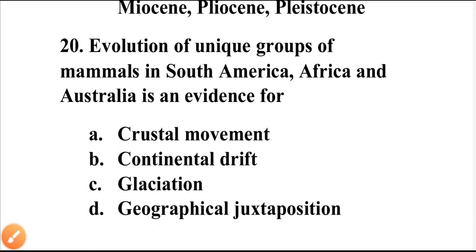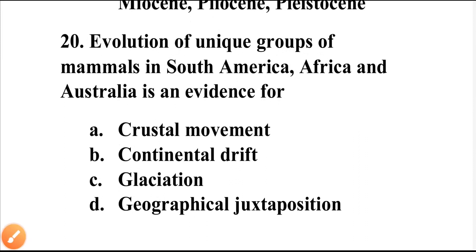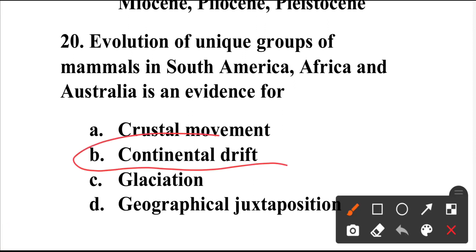Question number twenty: Evolution of unique groups of mammals in South America, Africa, and Australia is evidence of — crustal movement, continental drift, glaciation, or geographical juxtaposition? This is evidence for continental drift. Option B is the correct answer.